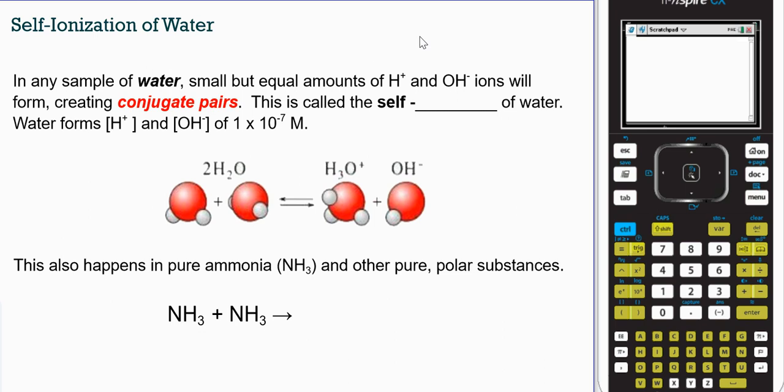So in any sample of water, small but equal amounts of hydrogen and hydroxide ions will form, creating conjugate pairs. Conjugate pairs just means things where you have a hydrogen ion moving between the two. What you see in the diagram is we have two water molecules. Then we see that a hydrogen ion is lost by one and gained by the other, creating hydronium and hydroxide.